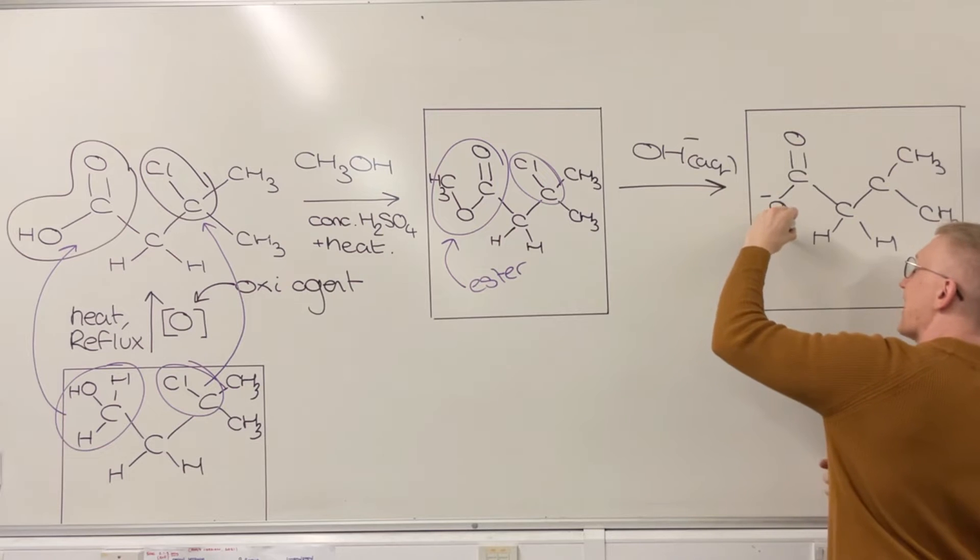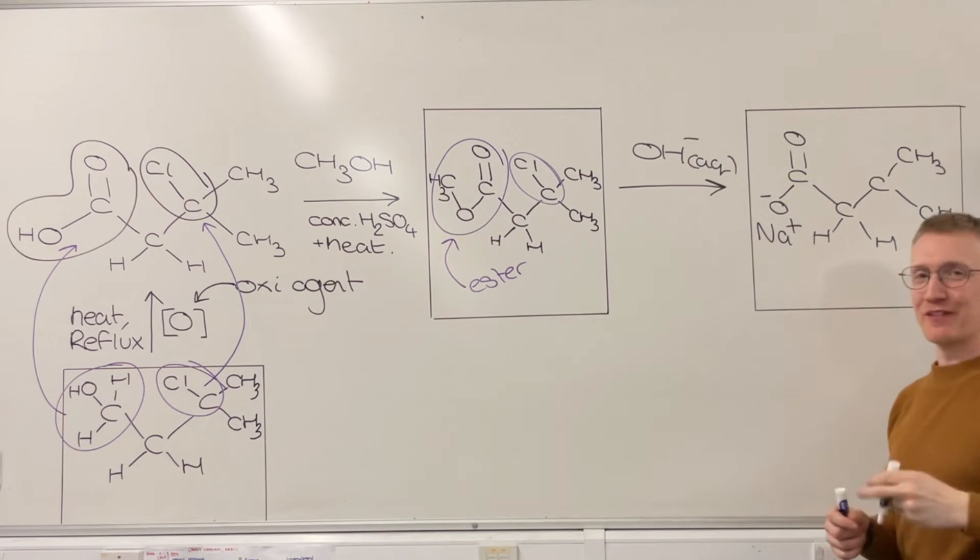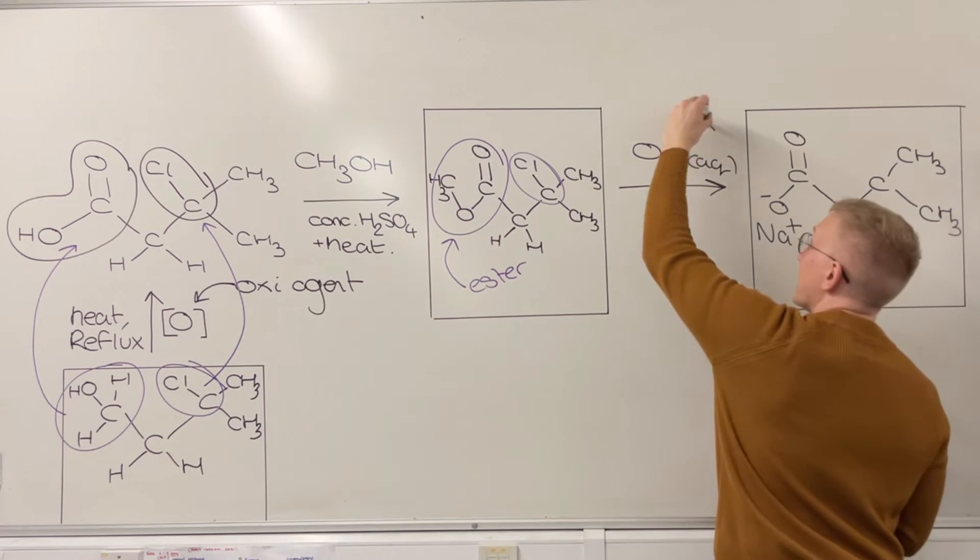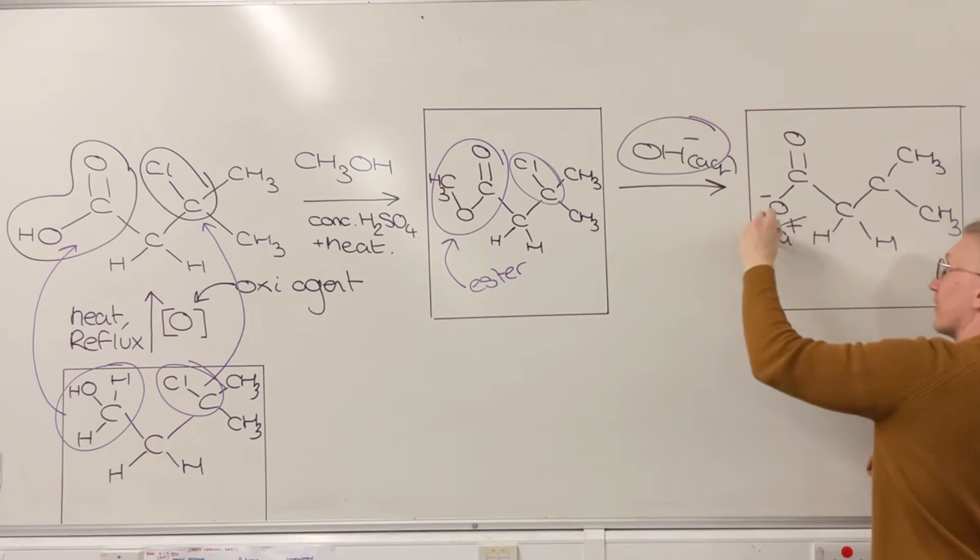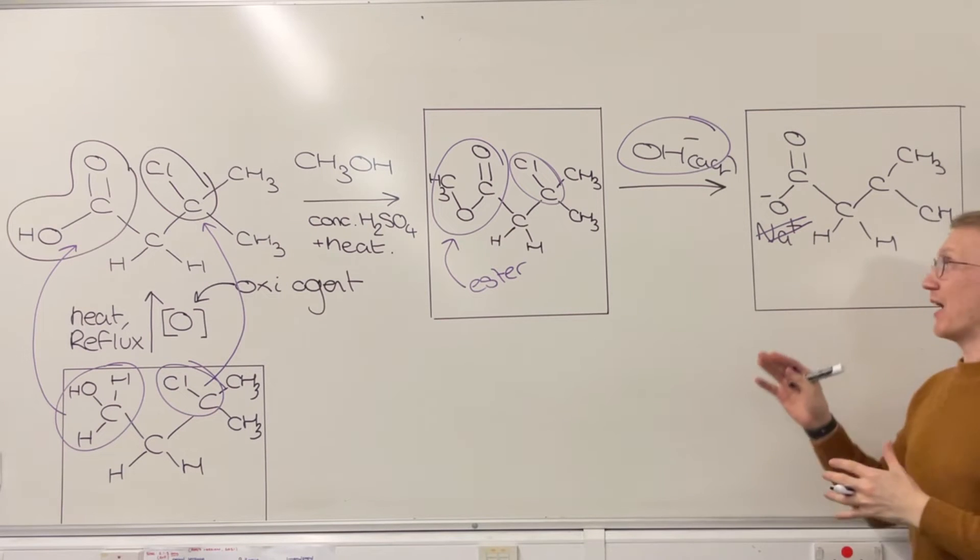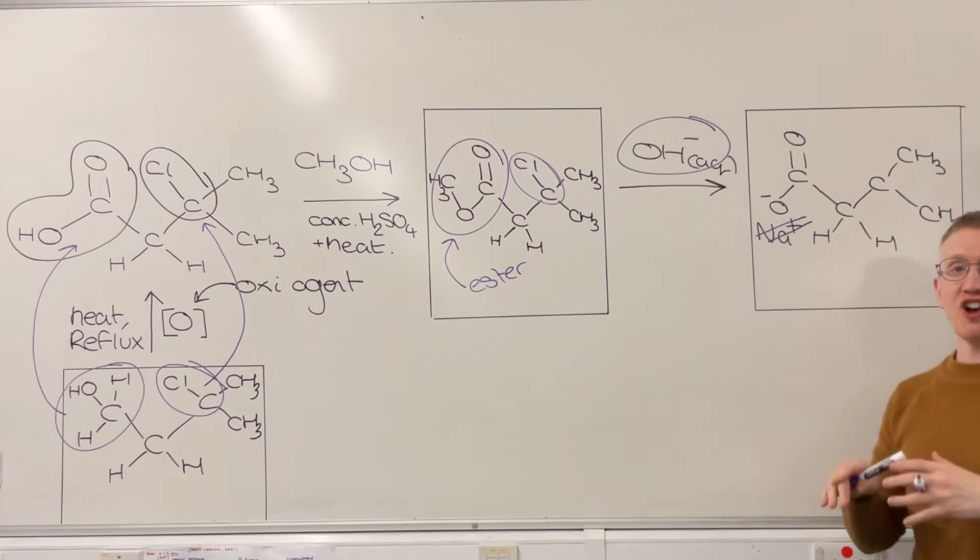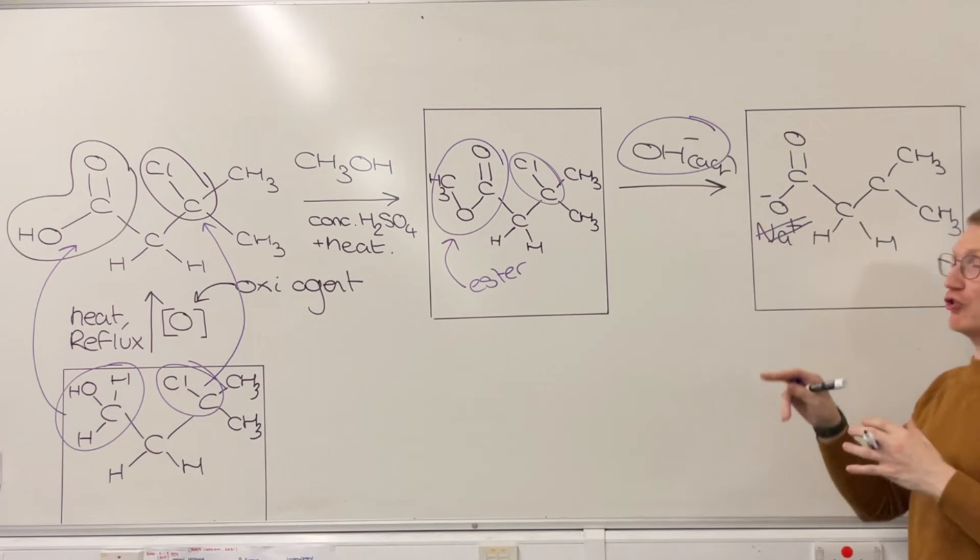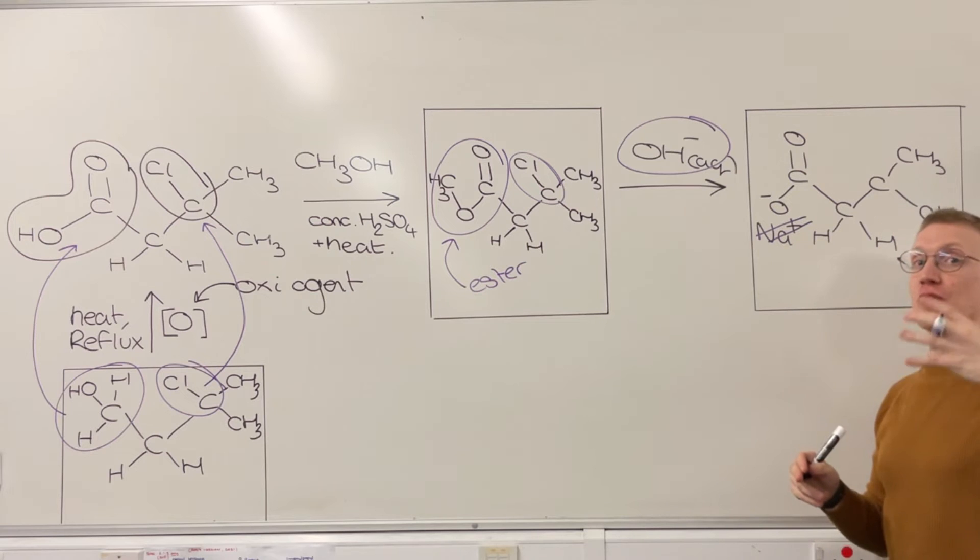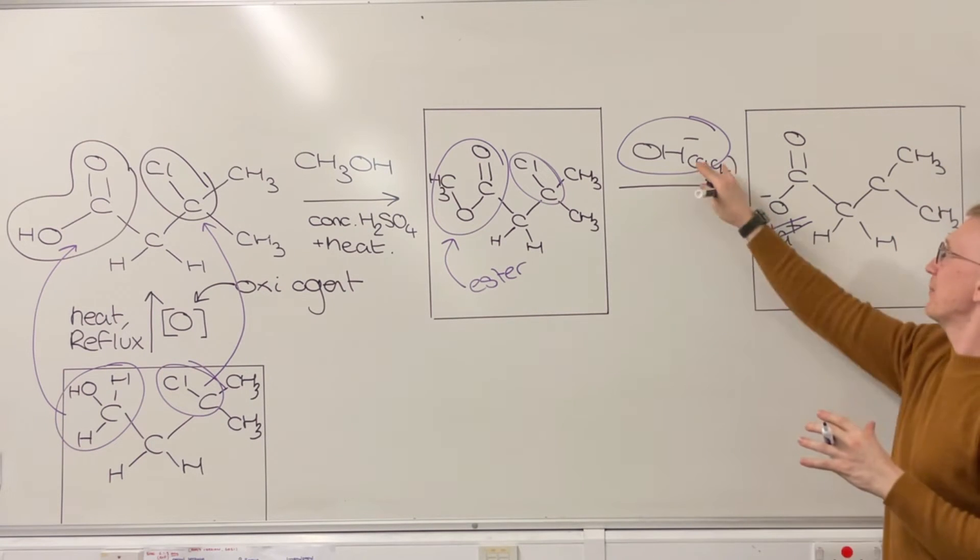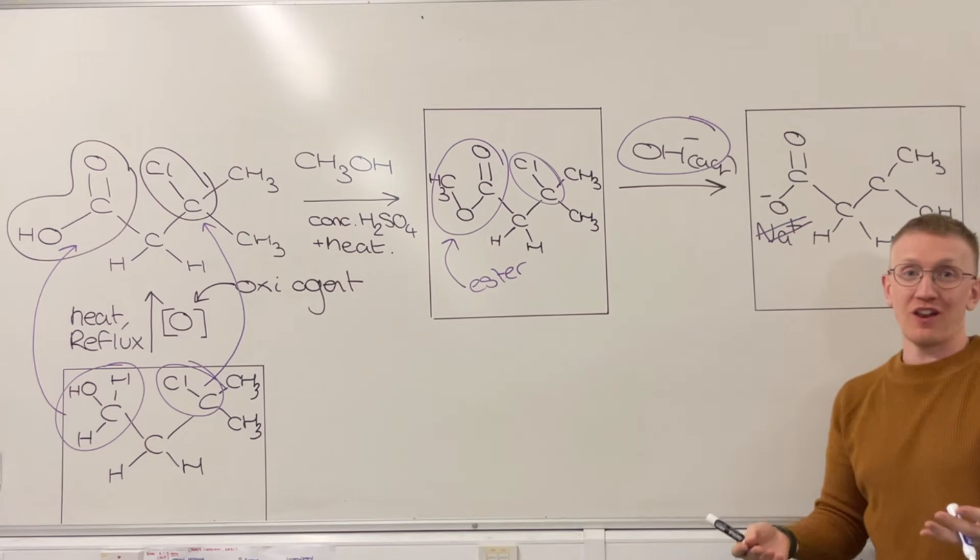Do I need to show the Na plus alongside? Absolutely not. I'm definitely not going to include that because it wasn't mentioned as sodium hydroxide in the reagents on the arrow. I want to make sure I'm showing that negative charge nice and clearly. If I was given sodium hydroxide in full then I could show the NaO, but I'm definitely not doing that here because I'm assuming what type of alkali was used.